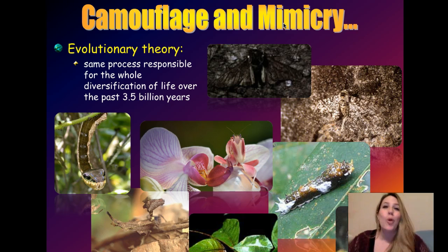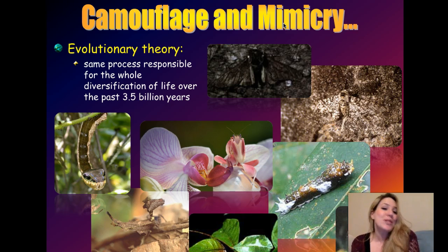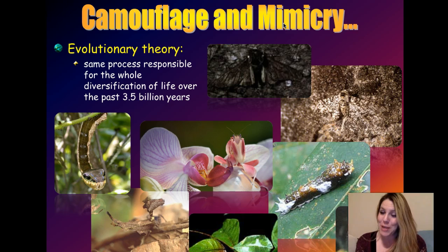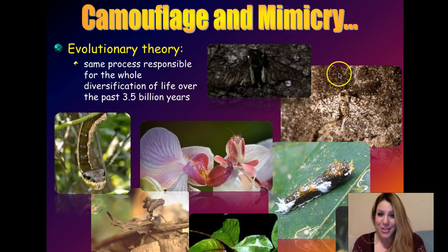I could spend a whole course just talking about camouflage and mimicry. Camouflage is when an organism blends in with its background and becomes hard to see. And mimicry is when the organism mimics something else in its environment.